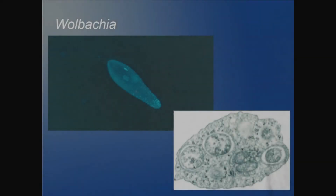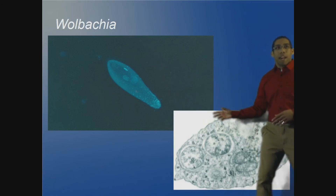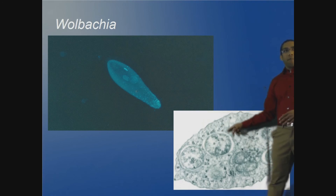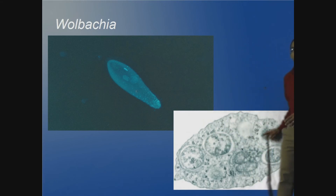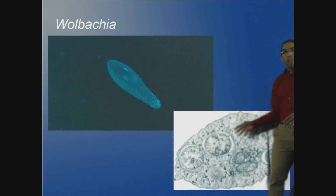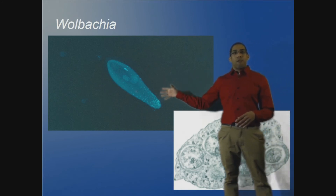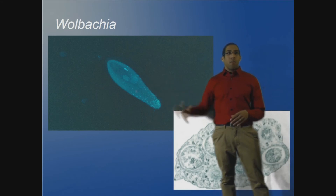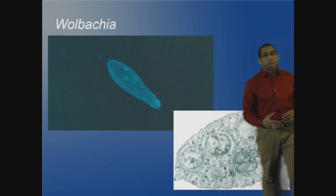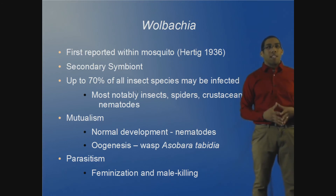My next bacterial symbiont in insects is Wolbachia, displayed in the two examples shown here. You can see Wolbachia within vacuoles of host cells, and in the second image it is highlighted as the very bright spots throughout an insect cell. Wolbachia was first reported within mosquitoes all the way back in 1936; however, it took a little longer for researchers to realize its importance.